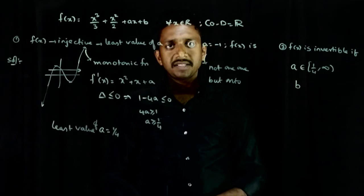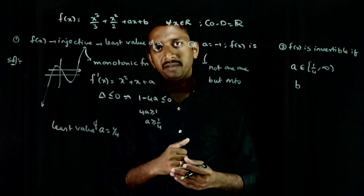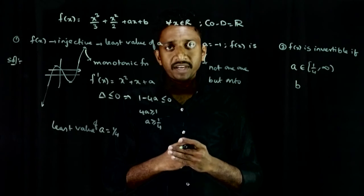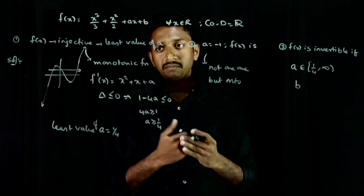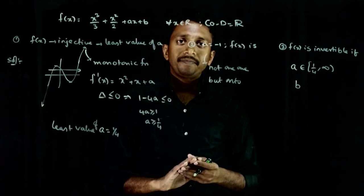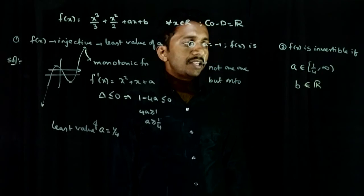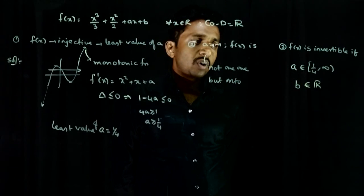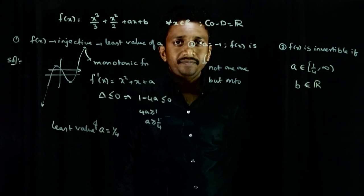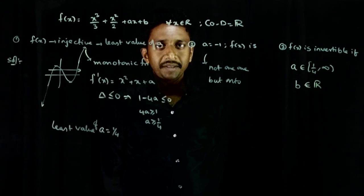So, what are the possible values of b? You can see, there is no contribution of b for the nature of this function. b can be anything. The one-one and onto nature of this function depends only on a. So, b can be any real number. But a has to be from one by four closed to infinity. So, this is the answer to this question. Thank you.